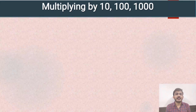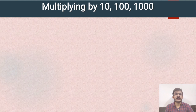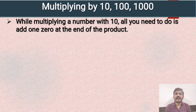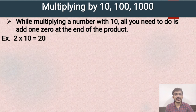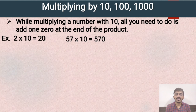Next topic is multiplying by 10, 100, and 1000. There are some rules you should keep in mind. First rule: while multiplying a number with 10, all you need to do is add one zero at the end of the product. For example, 2 multiplied by 10 — take the product of 2 and 1, which is 2, and add one zero at the end. So the answer is 20. Next example: 57 multiplied by 10 — 57 times 1 is 57, and we add one zero at the end. So the answer is 570.